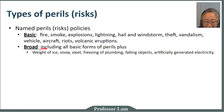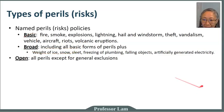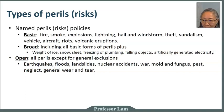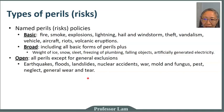If you have a named peril policy and the cause of damage is not listed, it will not be covered. In contrast, an open peril policy covers everything except what is specifically listed — such as earthquake, flood, and war. Earthquake and flood typically require separate policies. As long as the damage is not caused by one of these listed exclusions, it will be covered.